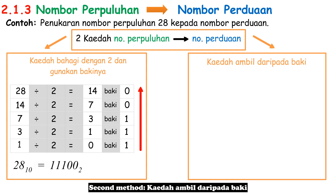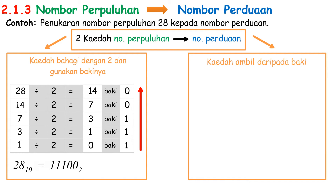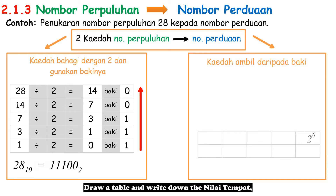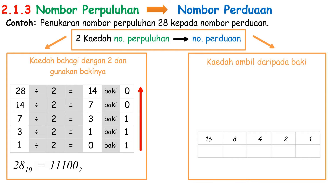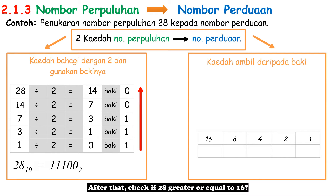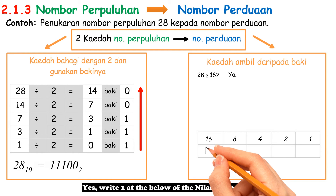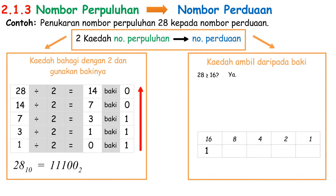Second method — Kaedah Ambil daripada Baki: draw a table and write down the Nilai Tempat. Make sure the Nilai Tempat is less than the Nombor Perpuluhan of your question — in this question it's 28. Check if 28 is greater than or equal to 16. Yes — write 1 below the Nilai Tempat 16.